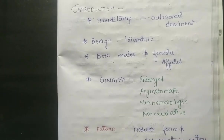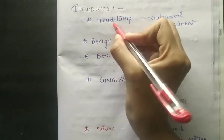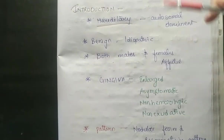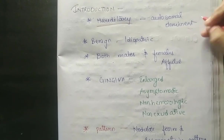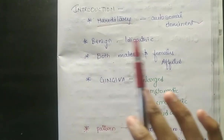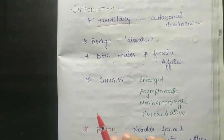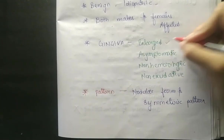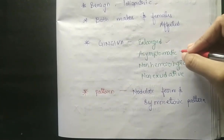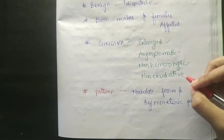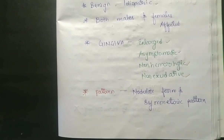For the general introduction to developmental disturbances of gingiva: hereditary disorders are autosomal dominant, benign, and idiopathic - meaning we do not know the etiology. Both males and females are equally affected. The gingiva can be enlarged, and symptoms are typically asymptomatic. It can be non-hemorrhagic and non-exudative with a nodular and symmetric pattern.